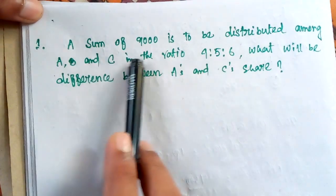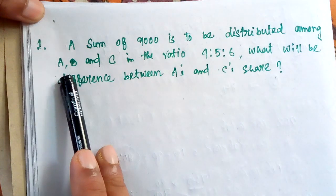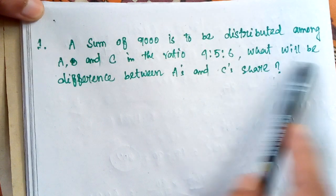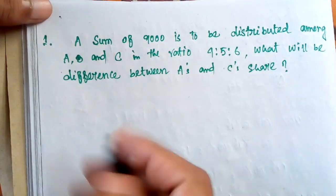A sum of rupees 9000 is to be distributed among A, B and C in the ratio of 4 is to 5 is to 6. What will be the difference between A's and C's shares? Now, we try to solve it.